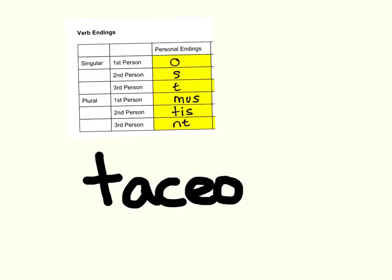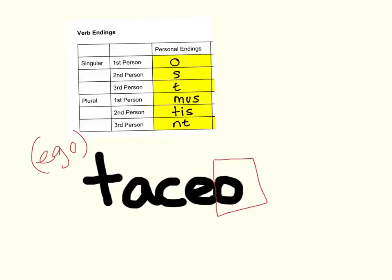Taceo. Again, we're going to find our ending: O, right here. Notice this O ending can be confused with the dative singular second declension noun ending. You have to know that taceo is a verb. O is singular and first person — the singular first person in English is I, and in Latin that word is ego, which is understood. Taceo means to be quiet, so this word translates as I am quiet.